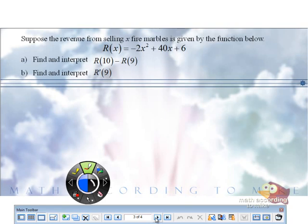Suppose the revenue from selling x fire marbles is given by the function below. R(x) equals negative 2x squared plus 40x plus 6. Part A.